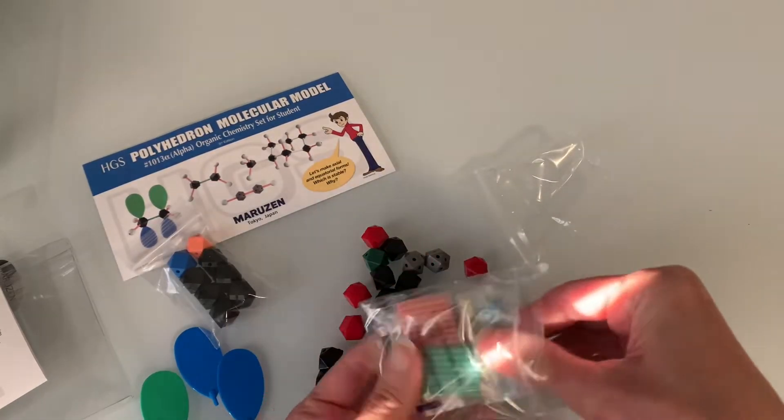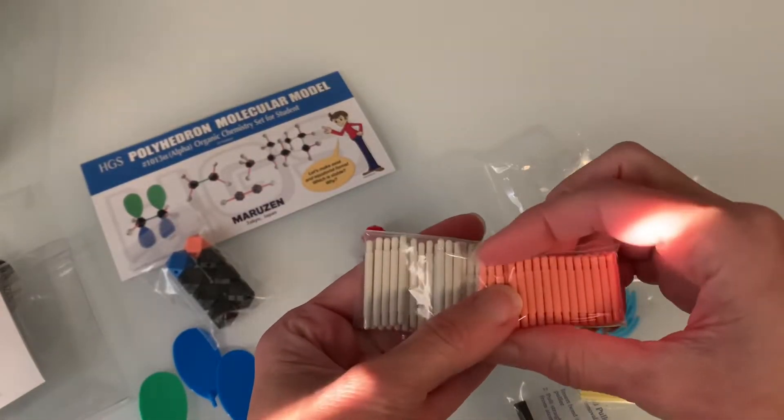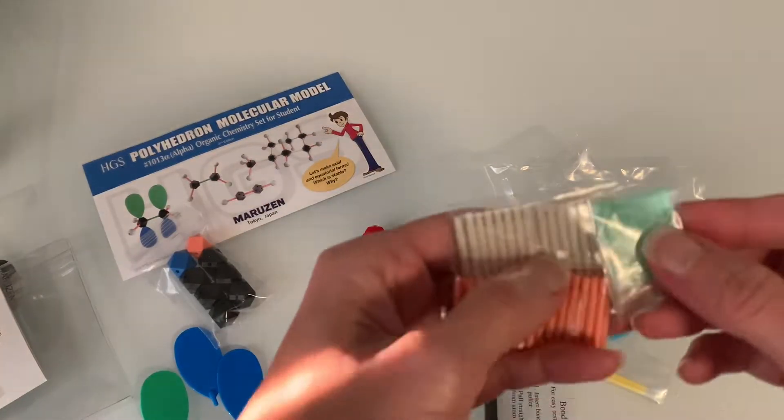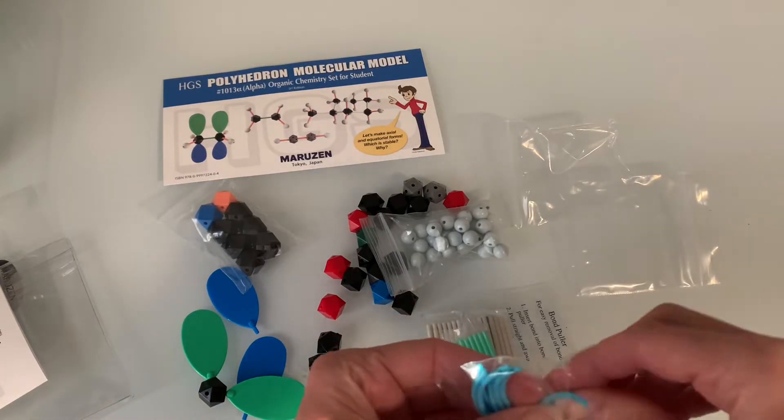This particular set also comes with three different colors of straight bonds and I'm going to show you a way that you could use that at the end of this video. Now one thing that I don't love about the HGS set is that it doesn't come with any flexible bonds.